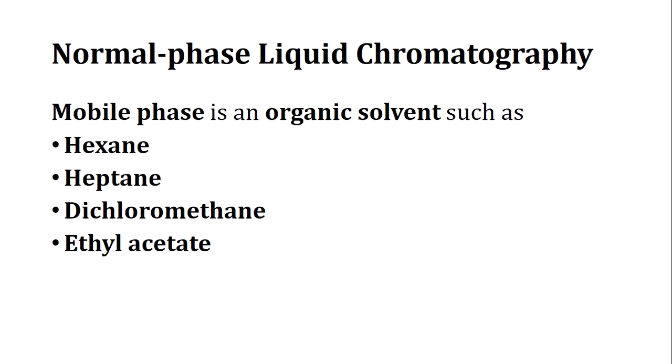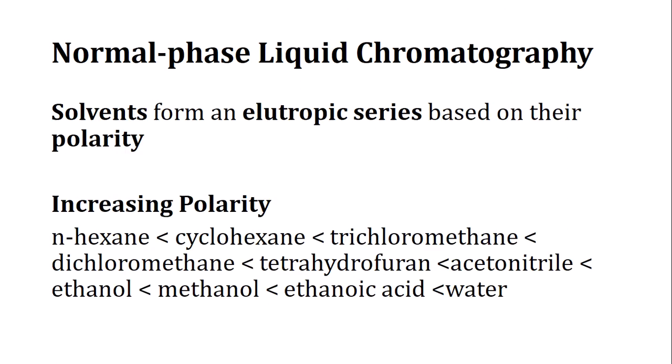In normal phase liquid chromatography, the mobile phase is an organic solvent — we can use hexane, heptane, dichloromethane, or ethyl acetate. These components are non-polar compared to the stationary phase. Solvents are selected from an eluotropic series based on their polarity.